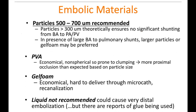Recommended particle size is 500 to 700 micrometers. Theoretically, particles greater than 300 microns ensure there's no significant shunting to the pulmonary vasculature. In the presence of larger shunts, larger particles or gel foam may be preferred to prevent that shunting.